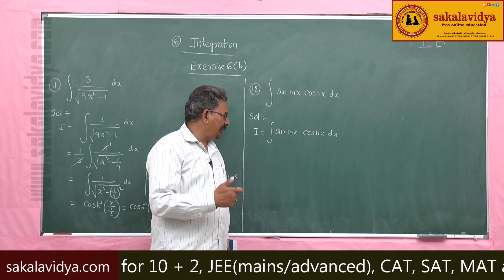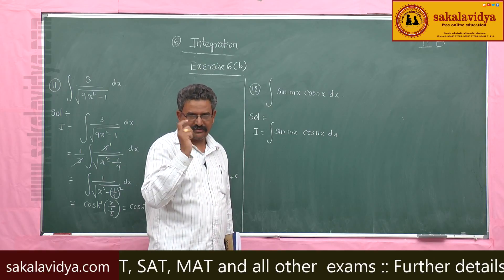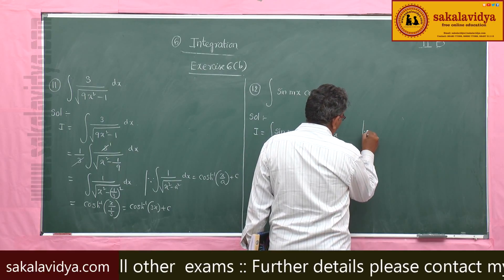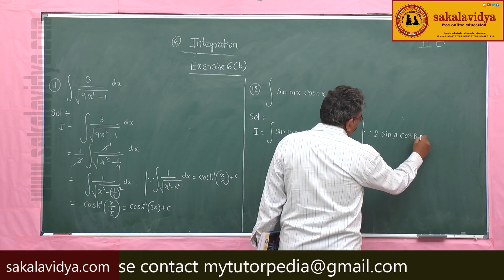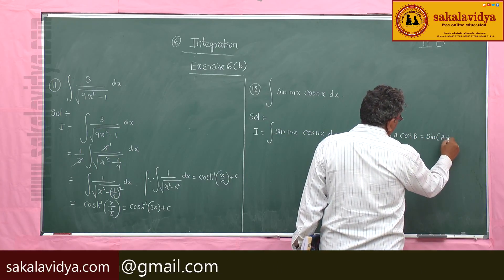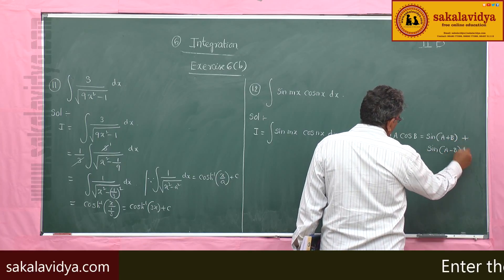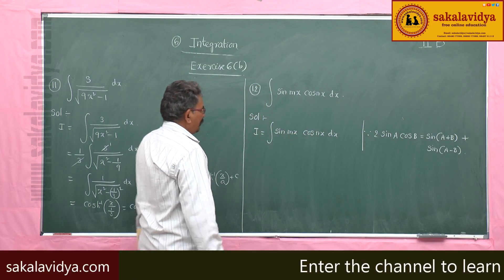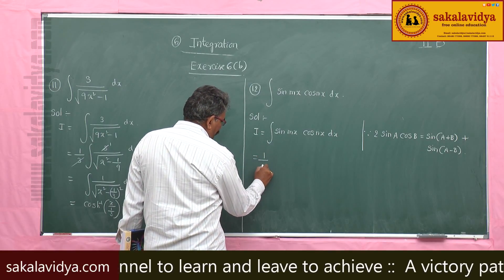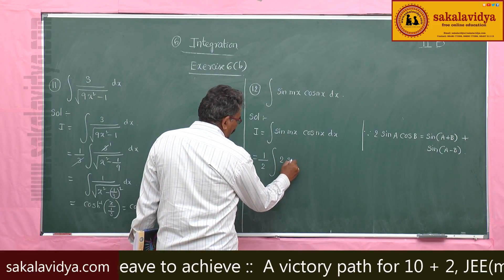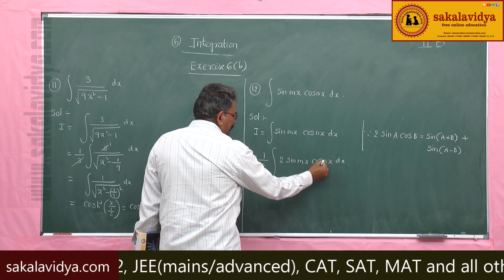Using product-to-sum transformations: 2 sin(A) cos(B) equals sin(A+B) plus sin(A-B). Multiply and divide by 2 in order to apply that formula, giving (1/2) integral of 2 sin(mx) cos(nx) dx, where mx is A and nx is B.